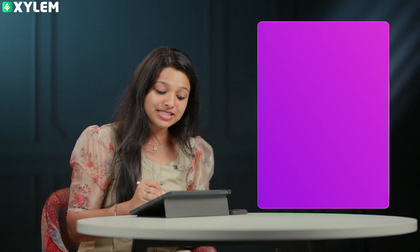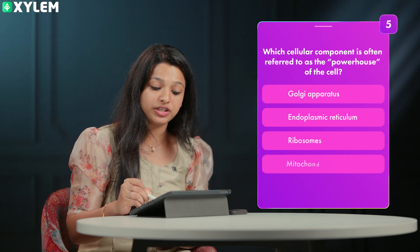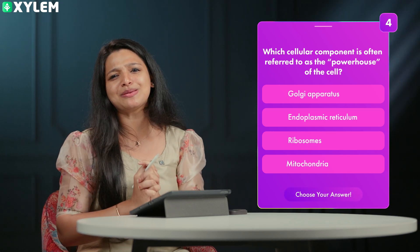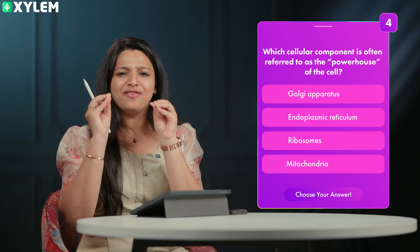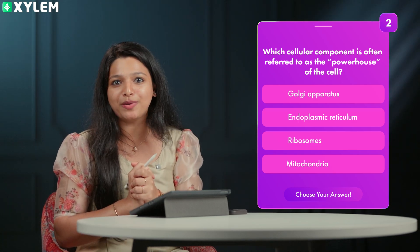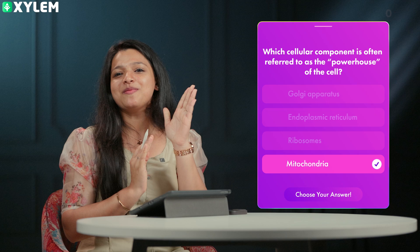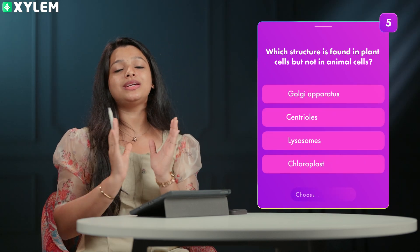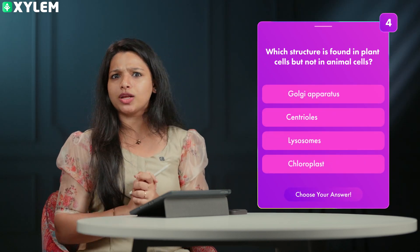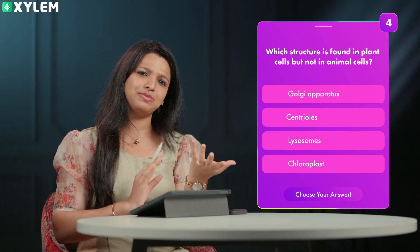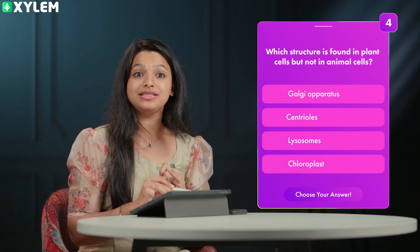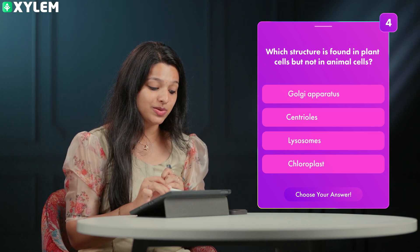Which cellular component is often referred to as the powerhouse of the cell? Next question: which structure is found in plant cells but not in animal cells? The options include chloroplasts, centrioles, and lysosome nucleus.